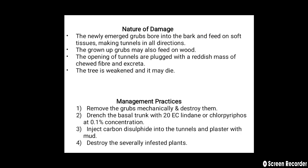The nature of damage: newly emerged grubs bore into the bark and feed on soft tissues, making tunnels in all directions. Grown-up grubs may also feed on the wood, and the openings of tunnels are plugged with a reddish mass of tube fiber and excreta. The tree is weakened and may die. Management: remove the grubs mechanically and destroy them. Drench the basal trunk with 20% lindane or chloropyrifos at 0.1% concentration. Inject carbon disulphide into the tunnels and plaster with mud. Destroy severely infested plants.